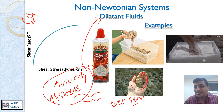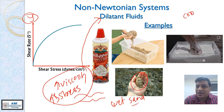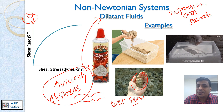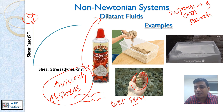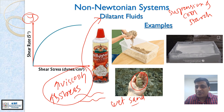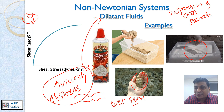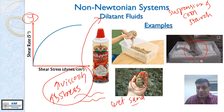Another example is a suspension of corn starch. As you can see in the animation, it flows very nicely under low force. But when you hit the corn starch suspension with high force, it becomes very solid there. Let us figure out why it becomes solid in the next slide.